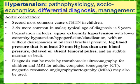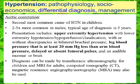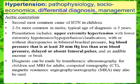We also commonly note delayed or absent femoral pulses, and there may also be an audible murmur or bruit. The diagnosis can be made by transthoracic ultrasonography for children and MRI if caught later in adulthood. CT scanning and MRA may also be used, but in children — the age group most typically affected — the diagnosis can be made preferentially by transthoracic ultrasonography.